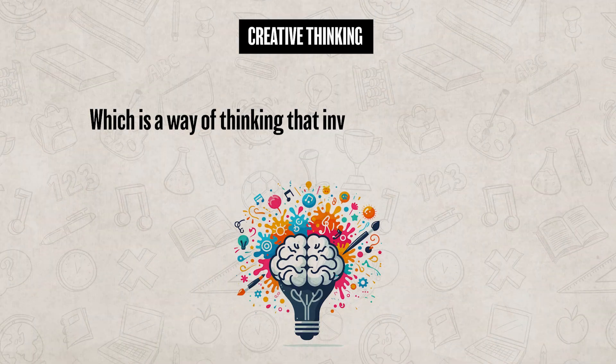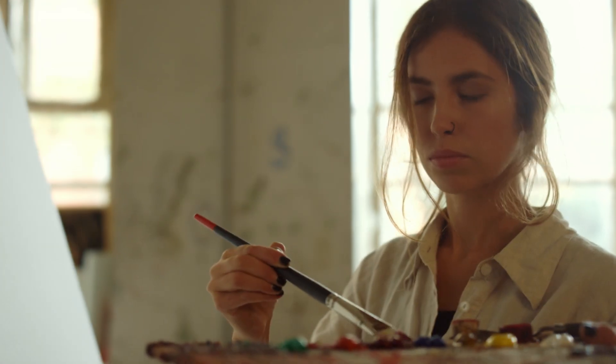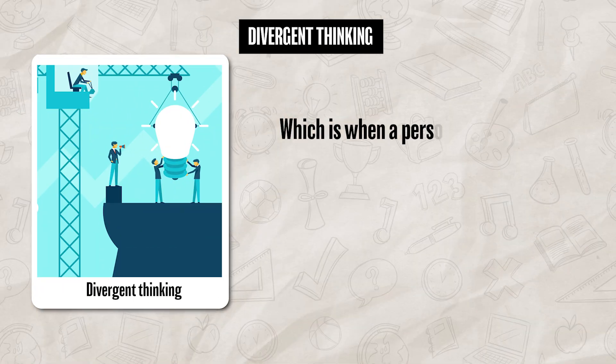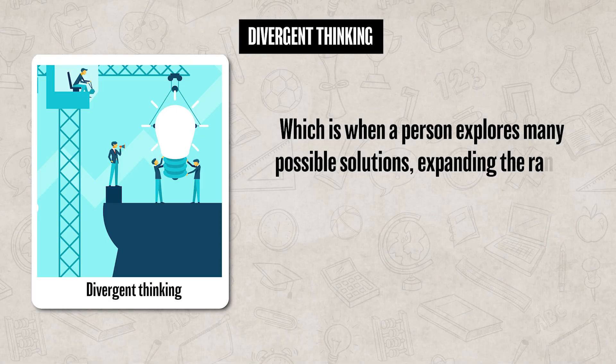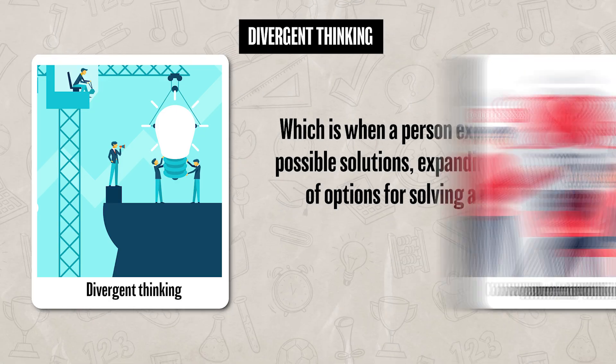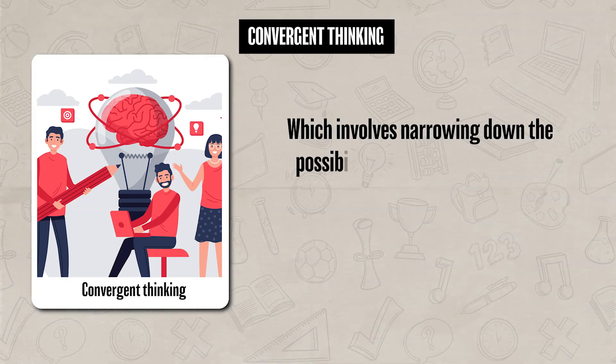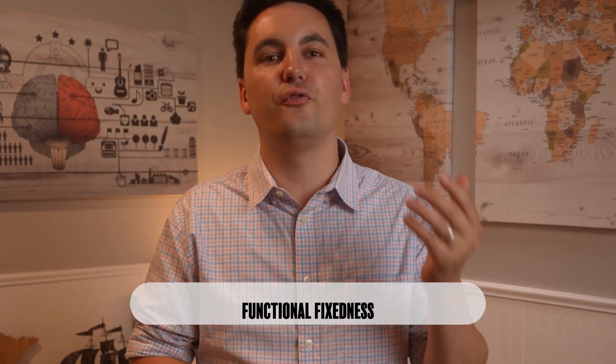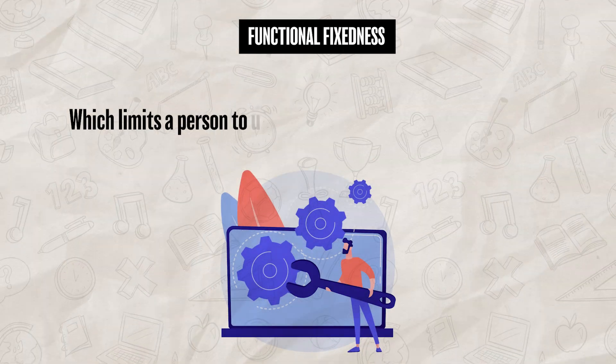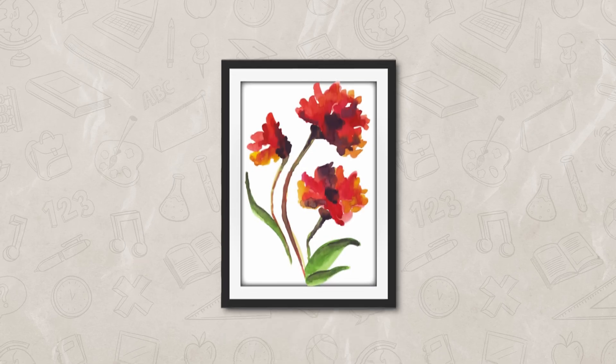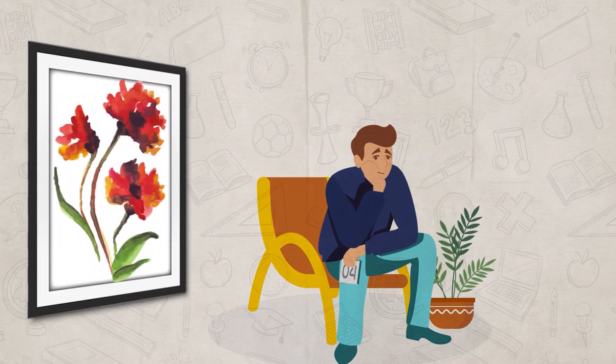To wrap up this video, we need to talk about creative thinking, which is a way of thinking that involves coming up with new and original ideas. Generally, people who are really creative use divergent thinking, which is when a person explores many possible solutions, expanding the range of options for solving a problem. This is different from convergent thinking, which involves narrowing down the possibilities to identify the single best solution — while more efficient, it can sometimes hinder creativity. Creativity can also be hindered by functional fixedness, which is when a person limits using an object only to its traditional way. For instance, if you need to hang a poster but don't have a hammer, you might not think to use a heavy book. Instead, you might fixate on a hammer being the only tool for the job.